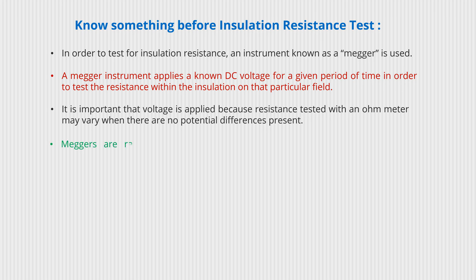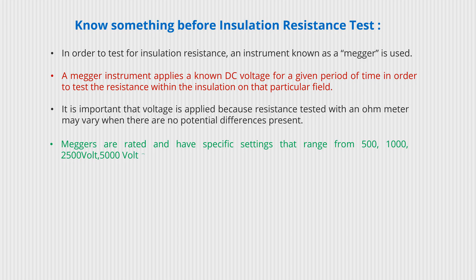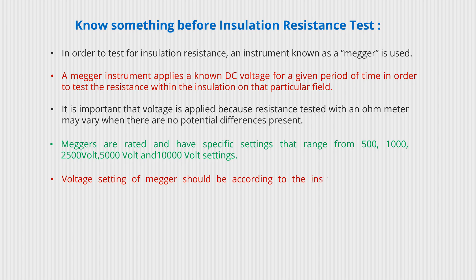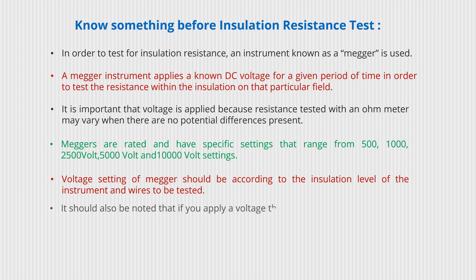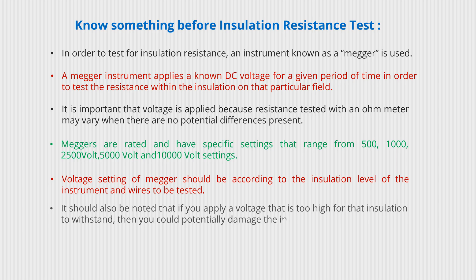Meggers are rated and have specific settings ranging from 500 volt, 1000 volt, 2500 volt, 5000 volt, and 10,000 volt settings. The volt setting of the megger should be according to the insulation level of the instrument and wires to be tested. It should also be noted that if you apply a voltage that is too high for that instrument to withstand, you could potentially damage the insulation.